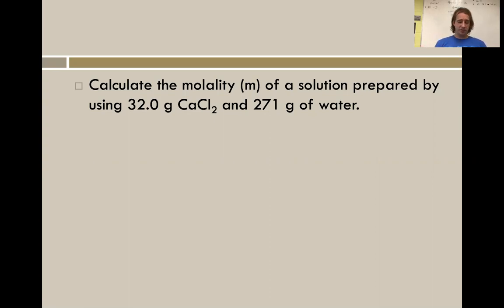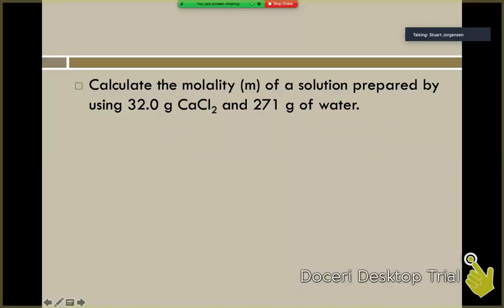Make sure that if we got any questions, we're seeing some good examples as we're working through. So I'm going to disappear so that it is cleaner and easier to see what's going on here. Let's go ahead and solve this problem as we think about our molality of a solution prepared by using 32.0 grams of calcium chloride and we're using 271 grams of water. So we're going to need to first know our formula for molality.